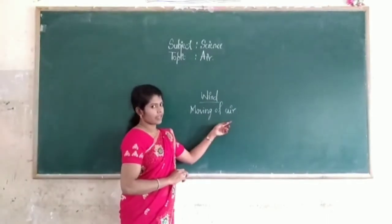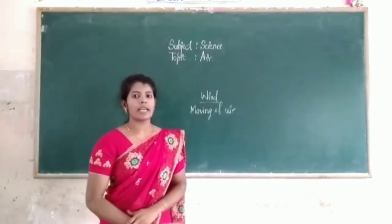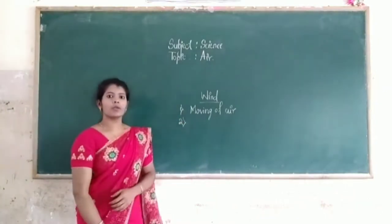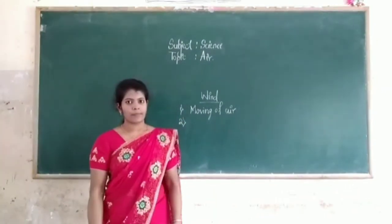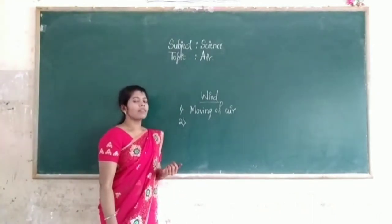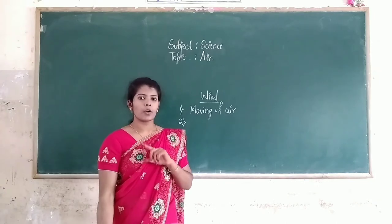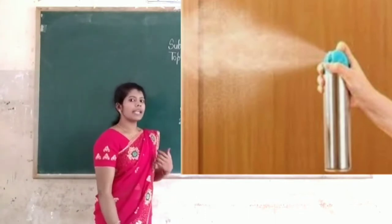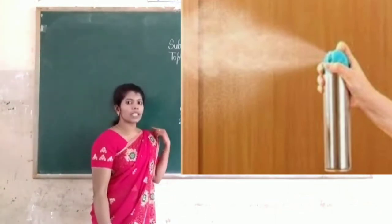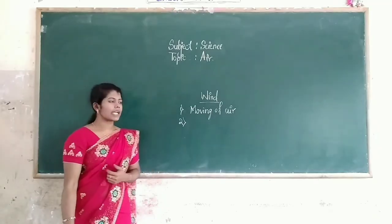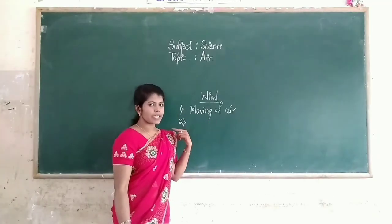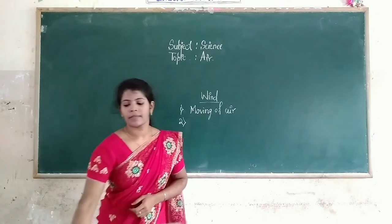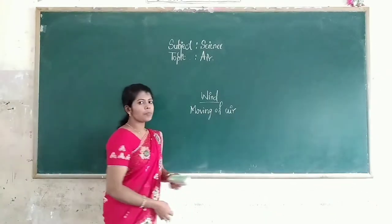It shows that moving of air. Then another example. We are using so many kinds of room fresheners. If we spray room spray air, the spray spreads all over the room. This means we are showing air moving from place to place. From these activities we can show that moving of air from place to place.